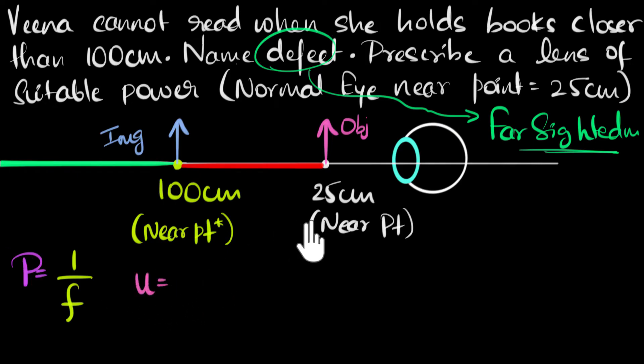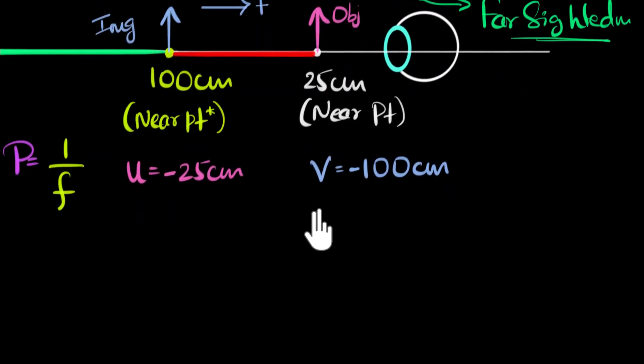So let's write that down. Object distance is given to us as 25 centimeters. We also know the image distance. The image distance is 100 centimeters. But we need to be careful. We have to use sign conventions. Since our lens is going to be over here in front of our eyes, we're gonna choose the incident direction as positive. So this is going to be the incident direction. And all the distances, all the positions on the right side of the optic center is going to be positive. This side would be negative. Object distance is negative because it's on this side. So this is negative 25 centimeters. Even the image distance is negative because it's on this side. So this will be minus 100.